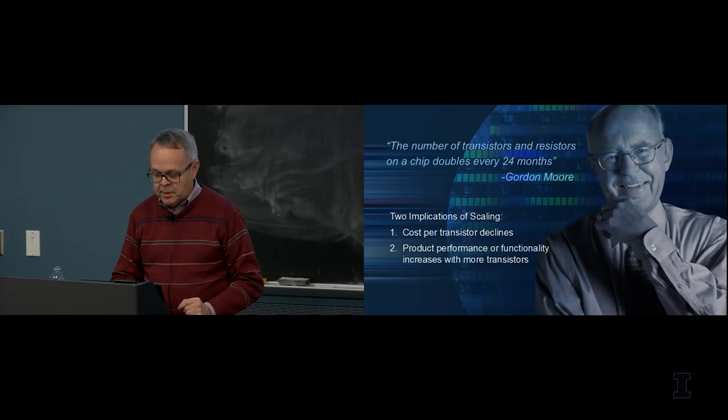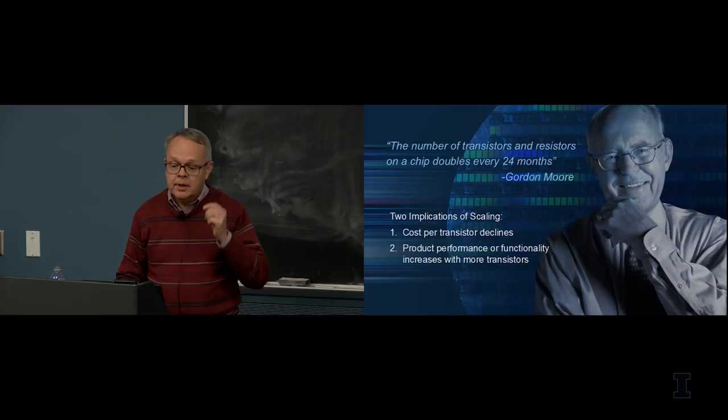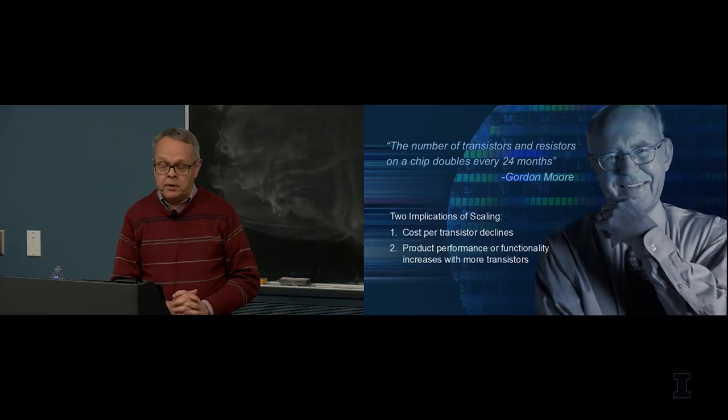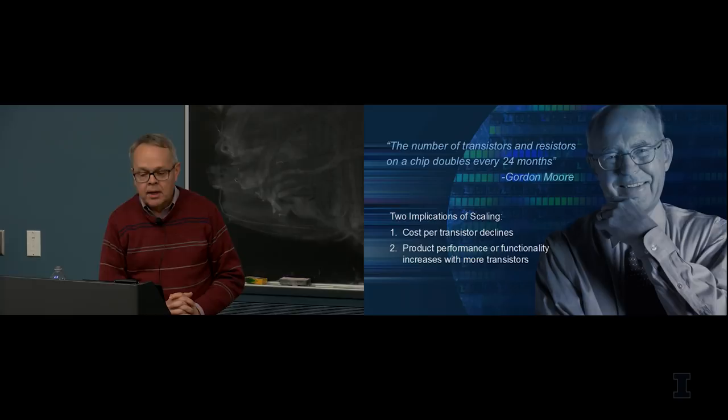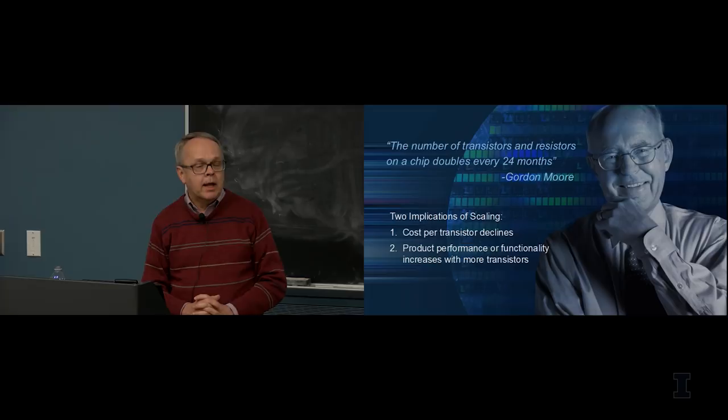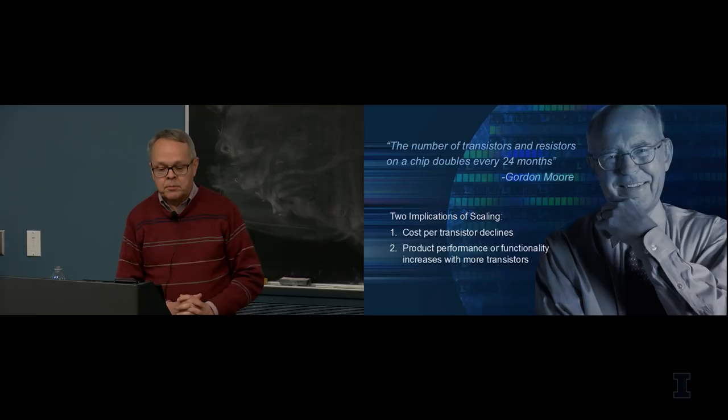I want to talk today about integrated circuit scaling and what we've done to bring us to the 10 nanometer generation, and some of the devices and options we're pursuing to go beyond 10 nanometers. This is the statement Gordon Moore made more than 50 years ago — that the number of transistors and resistors on a chip will double about every 24 months. There are two implications of Moore's Law: transistors cost less as you scale, and product performance or functionality increases as you add more transistors.